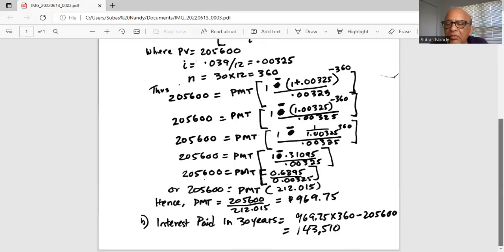And the interest on the whole amount is the total amount she's paying minus the principal, or the amount she borrowed, the present value of $205,600. And it works out to $143,510.